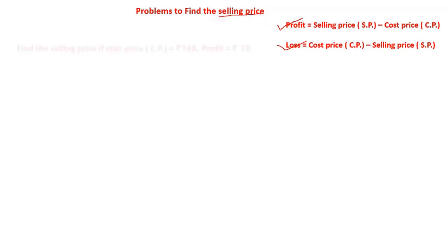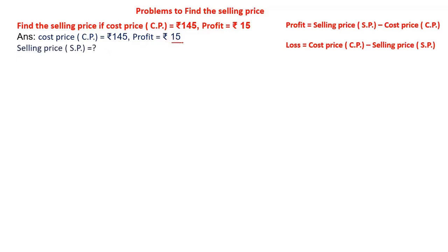Let's take a problem. Find the selling price if cost price is equals to rupees 145 and profit equals to rupees 15. To solve this, first we will write what they are given: cost price is equals to rupees 145, profit equals to rupees 15. We need to find the selling price, so I am writing here: selling price is equals to question mark.